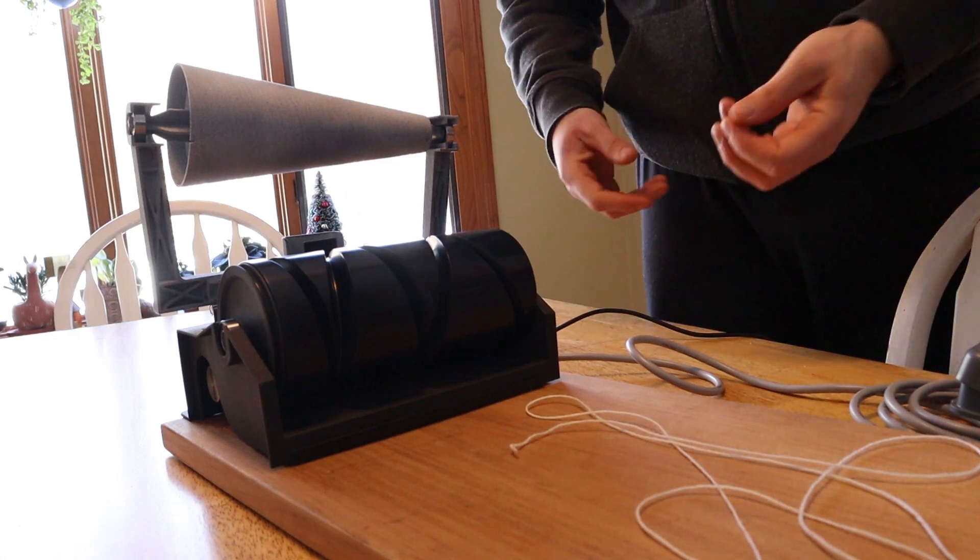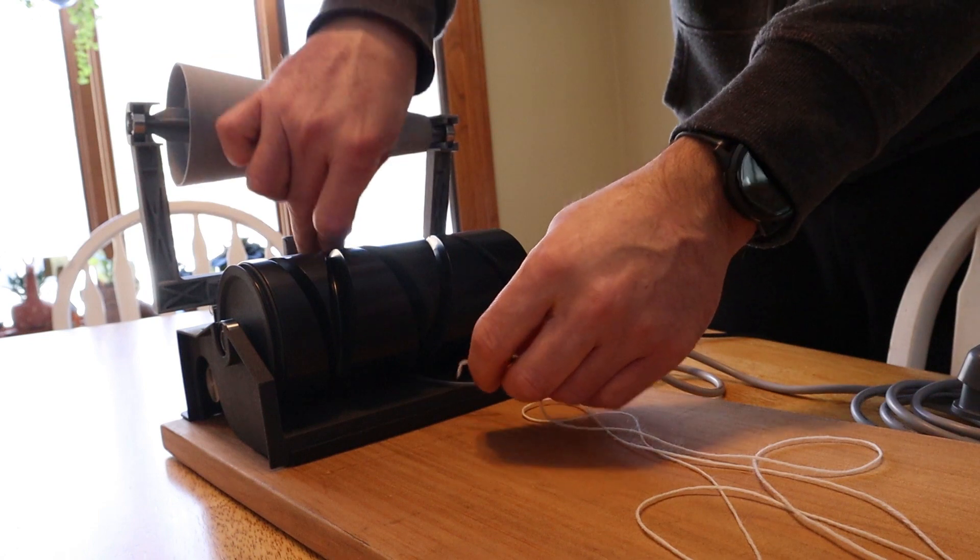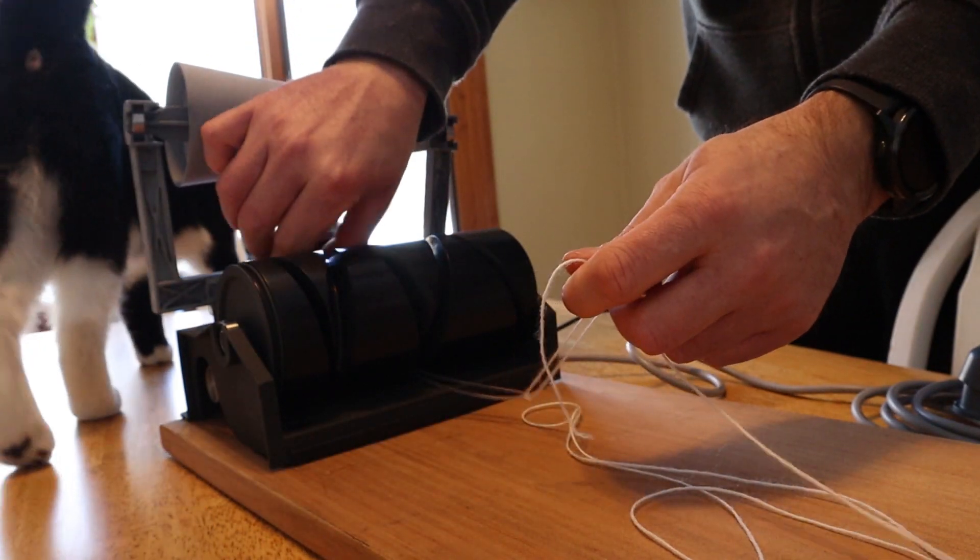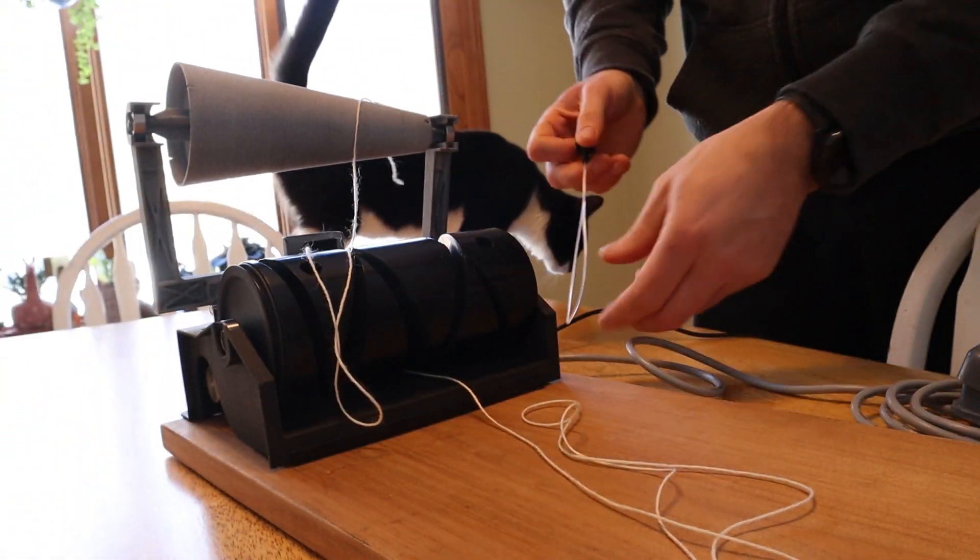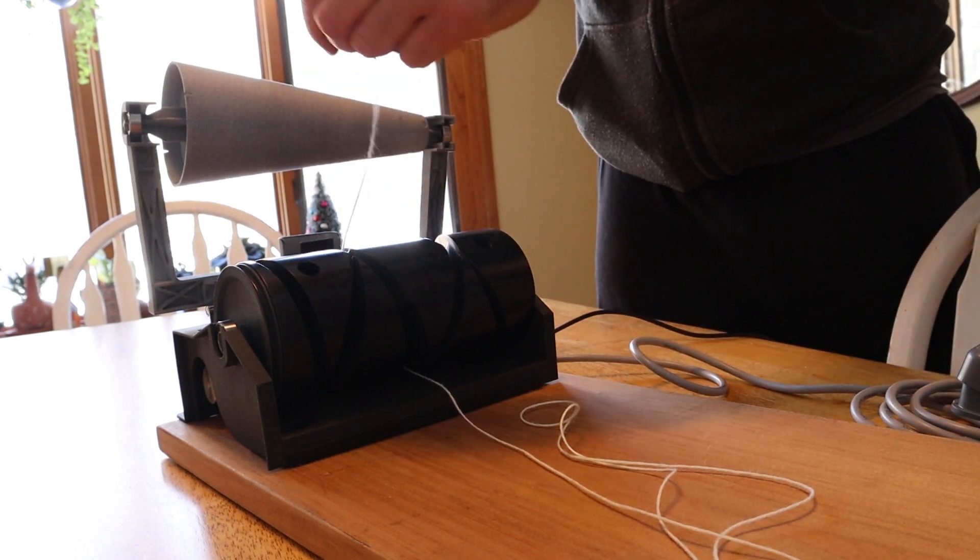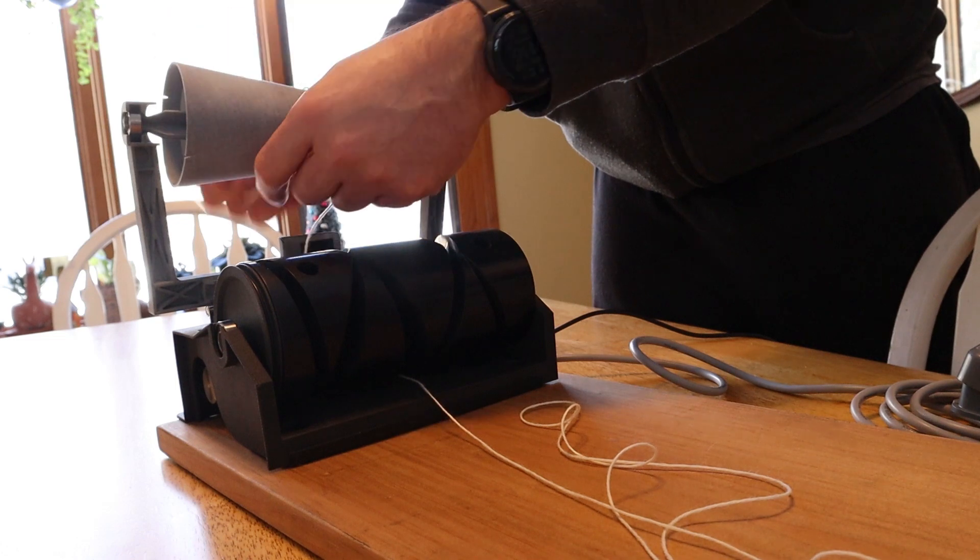And this is the cone winder itself. I have a little tool that comes with it which helps pull through the yarn under the drum, makes this process a little bit easier. And then after you've done that, you just want to wrap the yarn a few times around the cone like this.